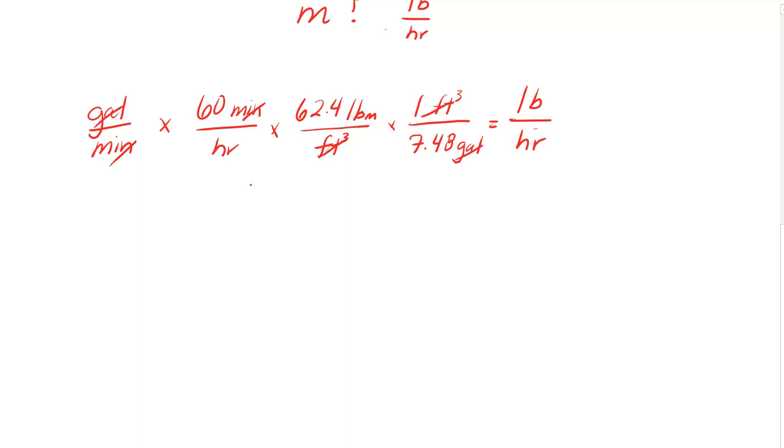Excellent. We're left with pound mass per hour just like we wanted. If you multiply 60 by 62.4 and divide by 7.48, you'll get our special value of 500. That value of 500 has units, and the units are pound mass minute per hour gallon.